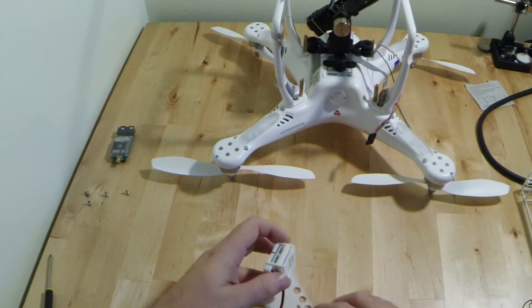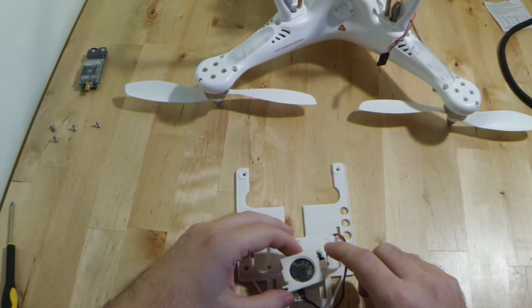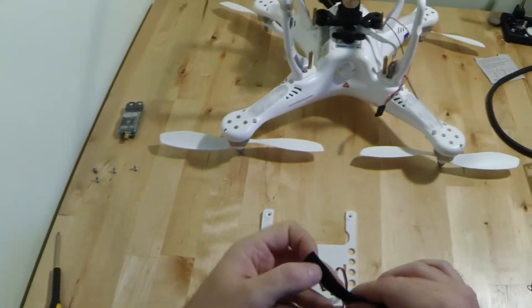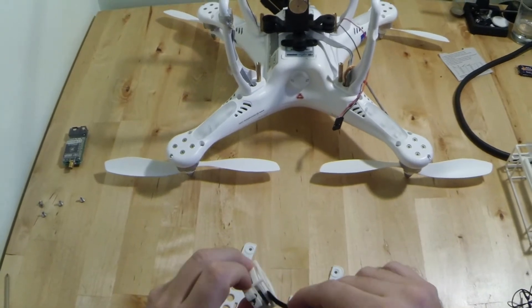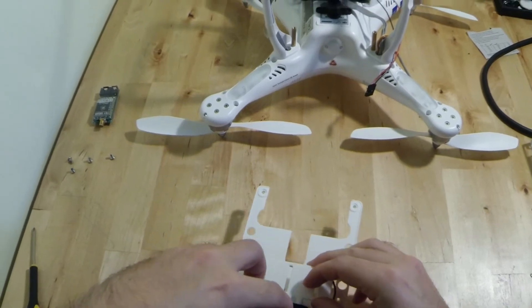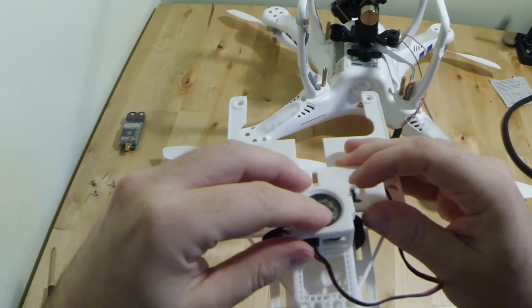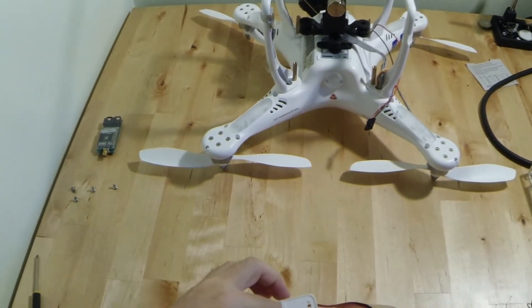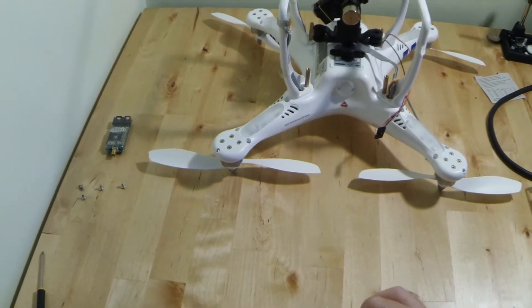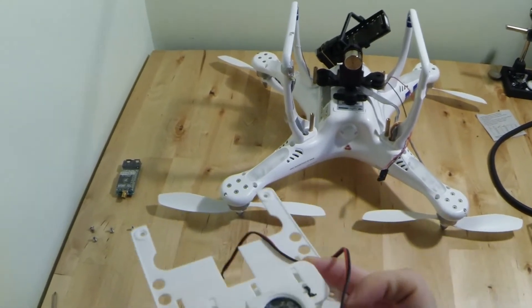Next, what we want to do is we've got the power filter. Let's just plug that into the end here. And then what I'm going to do is run this around, this way around, and basically using some Velcro, we're going to slot the Velcro through the Velcro slot. And we're actually going to mount the power filter through these slots. Hopefully you can see that. Around the back. Putting it nice and tight.